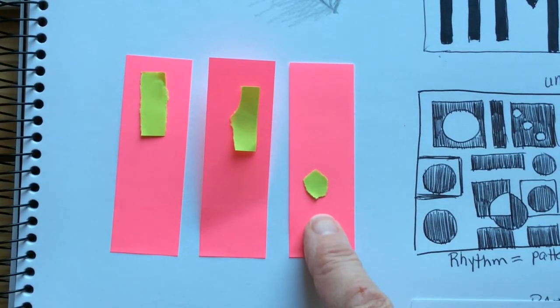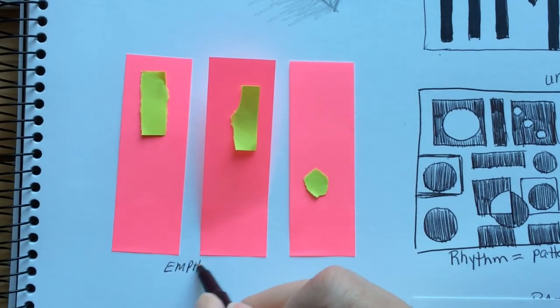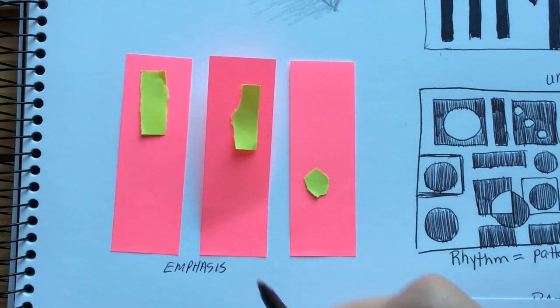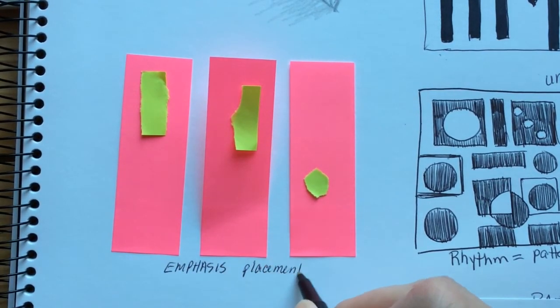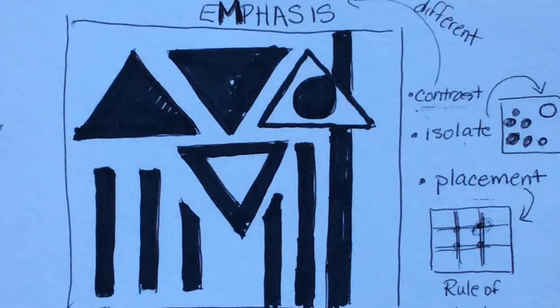But as soon as I make that circle all by itself, and it's different than the other one, so I've got contrast, isolation, and placement here because it's on that rule of thirds line and it's all by itself and it's different.